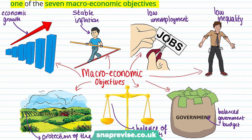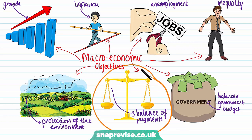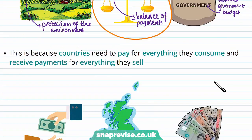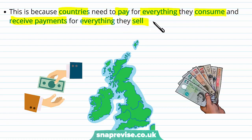The economic objectives that we have are: economic growth, stable inflation, low unemployment, low inequality, the protection of the environment, balanced government budget, and the one we'll be thinking about today — the balance of payments. The reason that we are concerned about the balance of payments is because countries need to pay for everything that they consume and receive payments for everything they sell.